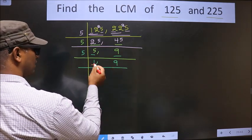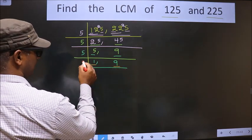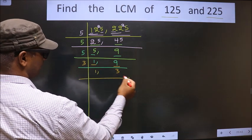Now here we got 1, so we focus on the next number, that is 9. Here 9 is nothing but 3 times 3 is 9. Now we have 3.